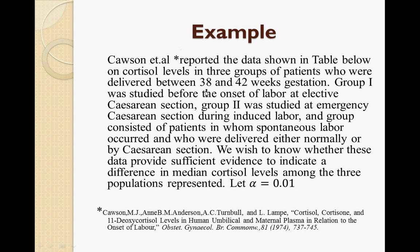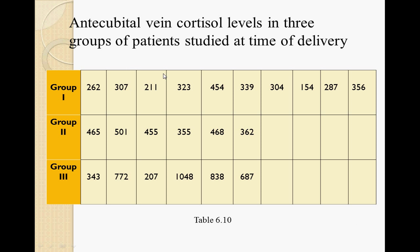This is the example for the Kruskal-Wallis test. We wish to know whether the data provides sufficient evidence to indicate a difference in median cortisol levels among three populations. We let alpha equal 0.01. The data shows cubital vein cortisol levels for three groups of patients studied at time of delivery. Group 1 has N1 = 10 samples, group 2 has N2 = 6 samples, and group 3 has N3 = 6 samples.